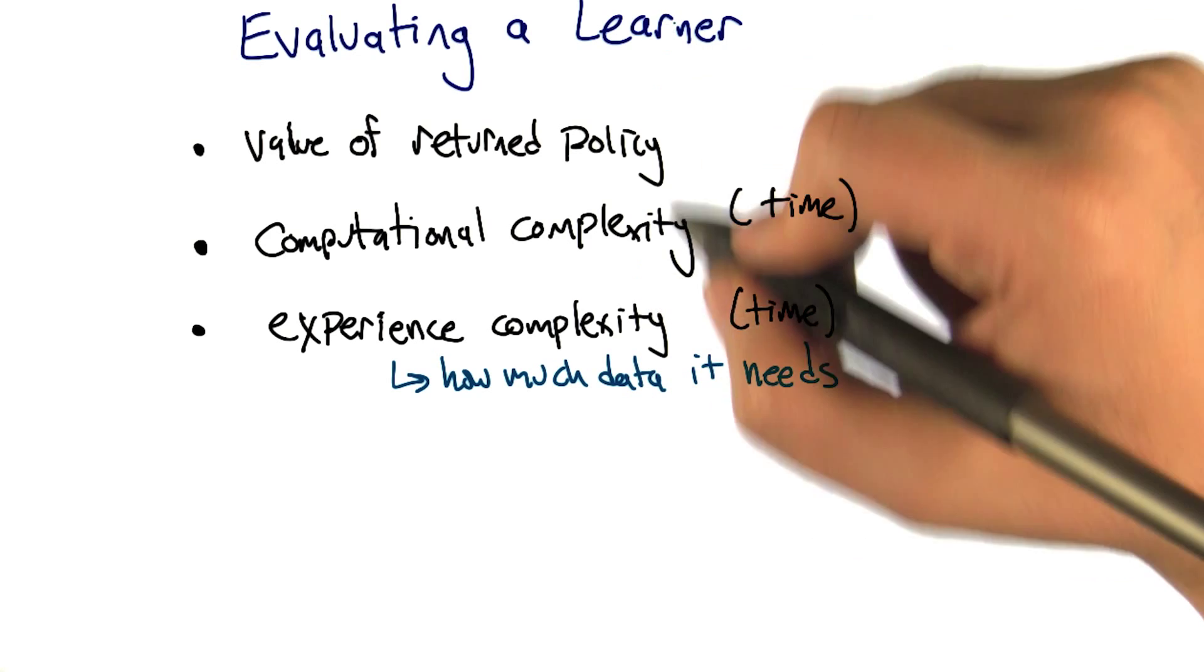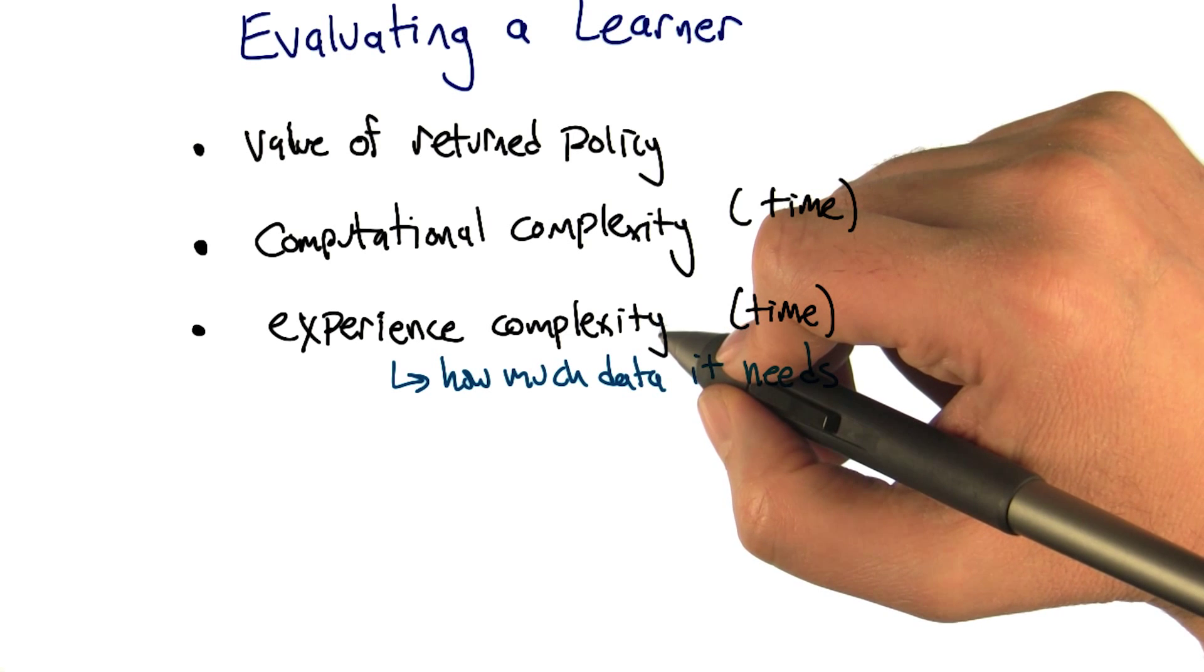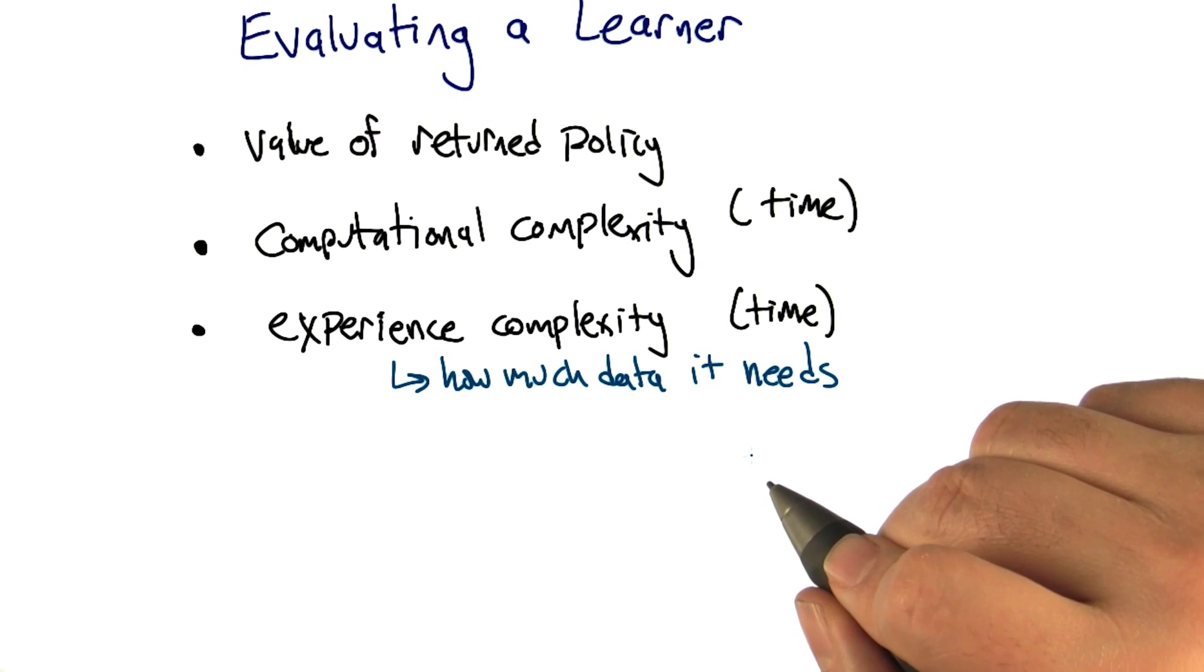So if two different learners can learn the same optimal policy, but one only requires a couple interactions with the environment to do it, and the other one requires a billion, you know, the one that has the lower experience complexity should be preferred.